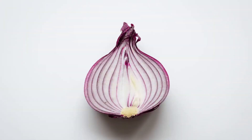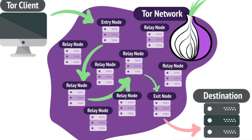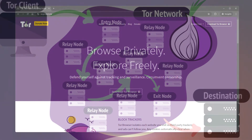Tor is often compared to an onion. You can imagine this onion with many layers — each layer is encryption. Each time your data passes through a node, one layer of encryption is peeled away but the next destination is still hidden. It's like peeling an onion: each layer reveals just a little bit but you never get the full picture. This is what makes Tor so secure.